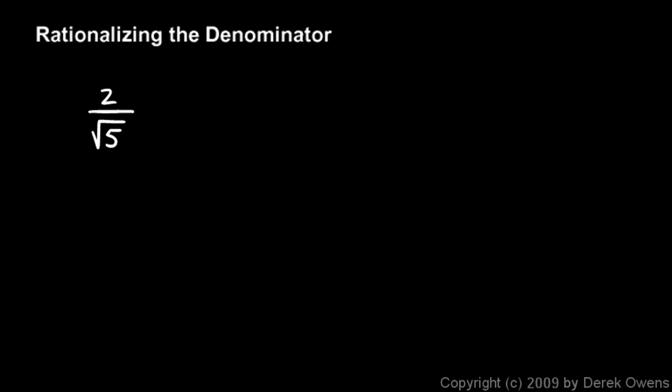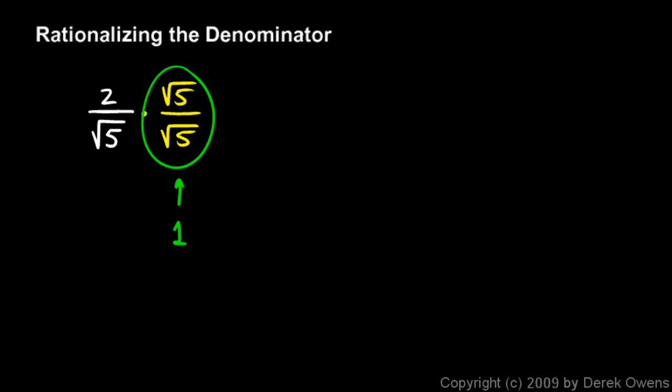To make our denominator a rational number, we need to multiply by the square root of 5 over the square root of 5. When we do that, all we've done is multiplied by 1, because anything over itself is equal to 1, so this fraction is just 1, and multiplying by 1 doesn't change anything. This is still mathematically equivalent to 2 over the square root of 5, but multiplying by this is going to change the way the answer is written.